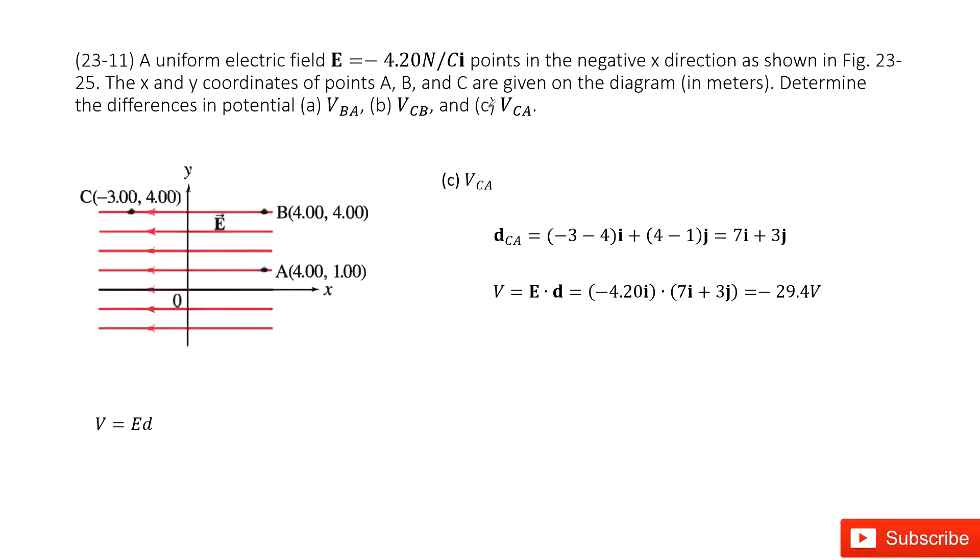The next case is C to A. Still, we need to find displacement C to A. Use the final position C minus the initial position A. So we get the displacement vector CA. It looks like this one. It has two components, x-component and y-component. Then we use E dot the displacement and get the answer there. Thank you.